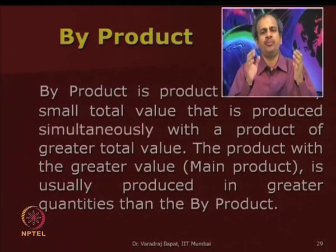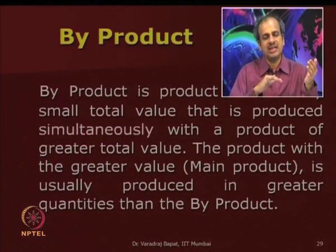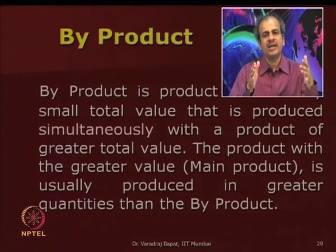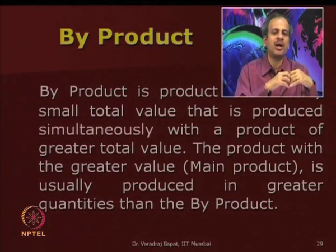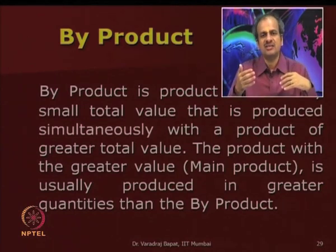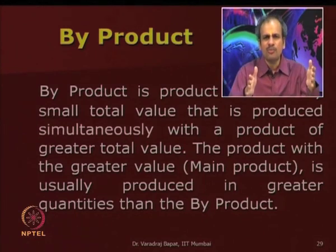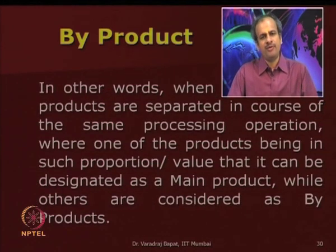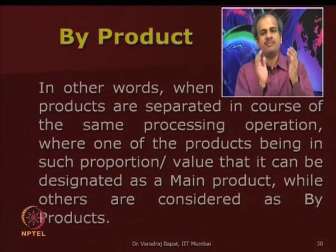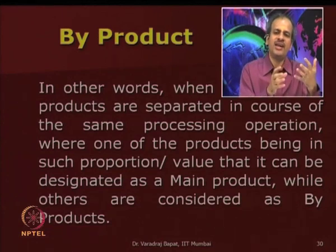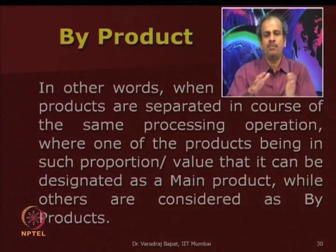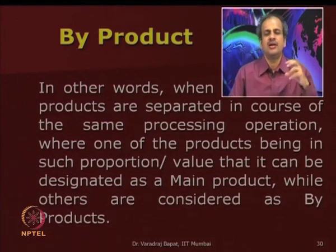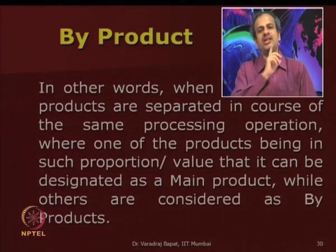Sometimes from the same process more than one product emerges, but they are not of equal economic importance. The one important product is called the main product, while other products of subsidiary importance are called byproducts. From refining, petrol, diesel, and gas are the main products, but you may also get other products which are not so important economically and at much lesser prices — those become byproducts. In a machine shop, whenever machining is done, some metallic scrap gets generated with a sellable value — that metallic powder is a byproduct, while the machined product is the main product.